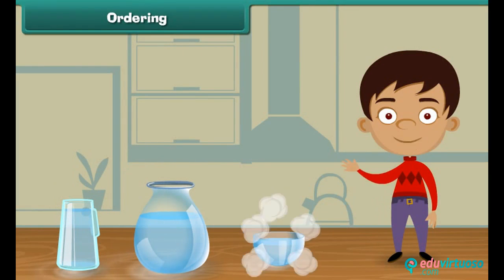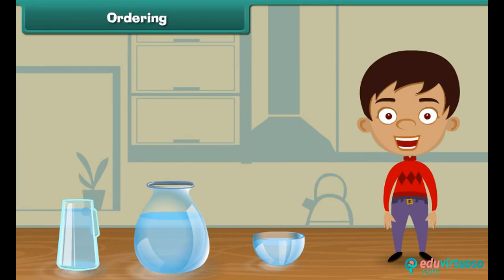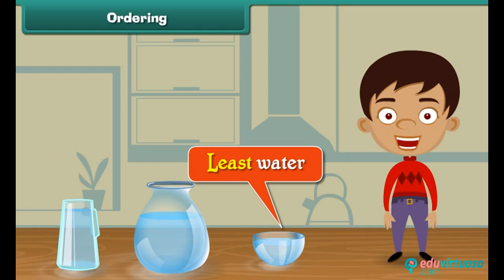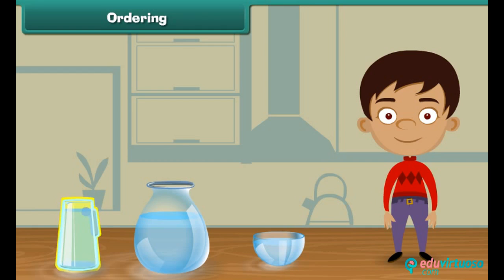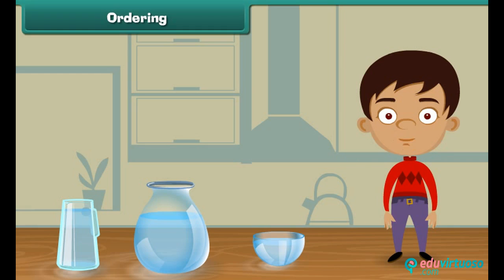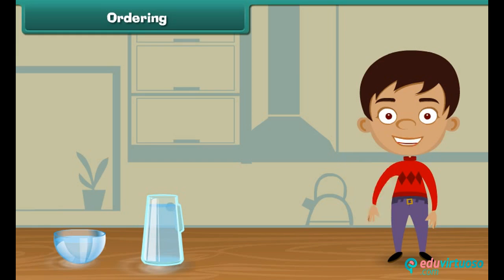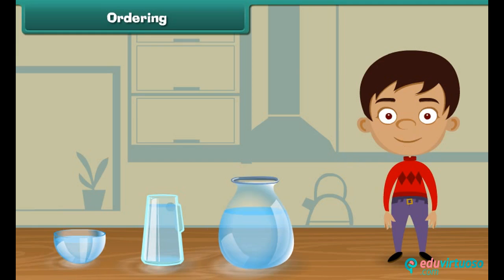Friends, we have three different vessels. Which vessel holds the least water? Yes, you are right. The bowl holds the least water. A jar holds more water than the bowl, and the pot holds more water than the bowl and the jar. Let us now arrange these vessels in increasing order. Bowl comes first because it holds the least water. The next in the row is the jar as it holds more water than the bowl. At last, we place the pot because it holds more water than the bowl and the jar.